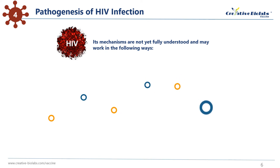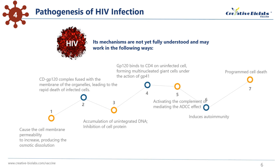Its mechanisms are not yet fully understood and may work in the following ways. 1. Because the HIV envelope protein inserts into the cell, or the virus sprouts and releases to cause the cell membrane permeability to increase, producing osmotic dissolution. 2. The membrane of the organelles fuses with the CD4-GP120 complex in the infected cells, which leads to the rapid death of infected cells. 3. The accumulation of unintegrated DNA, or the inhibition of cell protein during HIV infection, leads to the killing effect of HIV. 4. GP120 expressed in HIV-infected cells can bind to CD4 on the uninfected cell membrane, and fuse to form multinucleated giant cells under the action of GP41. 5. The HIV-infected cell membrane virus antigen binds to specific antibodies, and lyses the cells by activating the complement, or mediating the ADCC effect.